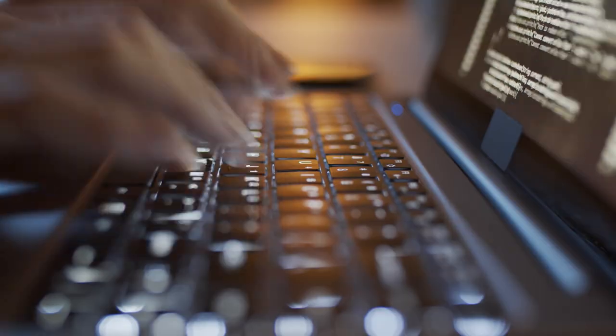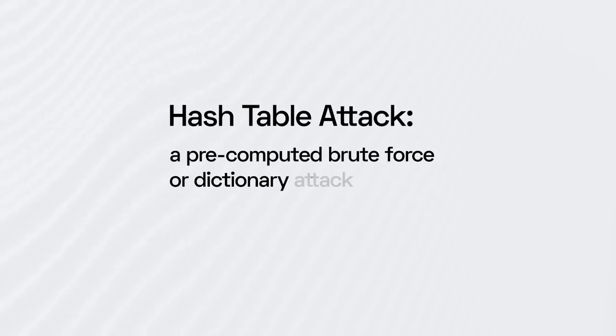Attackers have two types of tools at their disposal: hash tables and rainbow tables. Both are more effective when used against unsalted passwords. A hash table is essentially a pre-computed database of hashes, created by taking random strings and dictionary inputs for a hash function and storing those inputs and outputs in a table. The attacker can then do a reverse password lookup by comparing the hashes in the table to those from a stolen password database. Hash table attacks are fast because the attacker doesn't have to spend any time computing the hashes. The trade-off is the immense amount of space required to hold a hash table. A hash table attack is essentially a pre-computed brute force or dictionary attack.